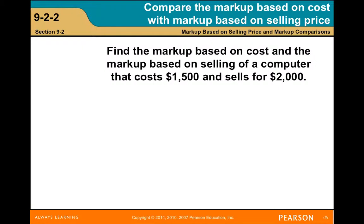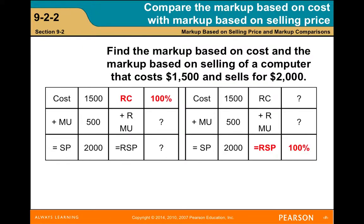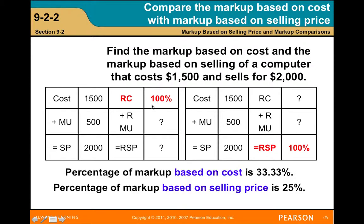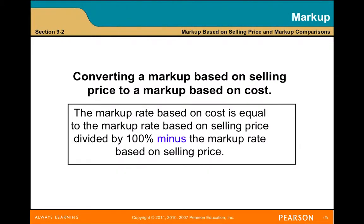Find the markup based on cost and the markup based on selling price of a computer that costs $1,500 and sells for $2,000. Set up the table with cost, markup, and selling price. The percent of markup based on cost is 33.3%; the percent of markup based on selling price is 25%. What accounts for the difference?